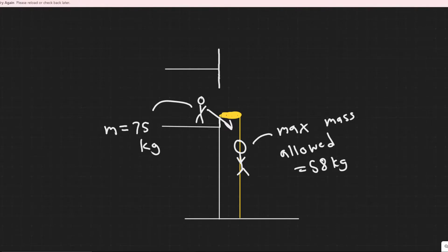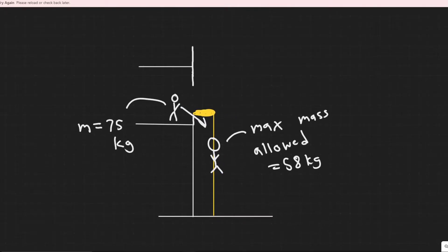So notice that the max he can allow is less than what he actually is. Therefore, if he gets on this thing, it's going to break. So if he's just hanging on this thing, it's going to break and we don't want that. So we want to figure out how we can use this rope to escape.